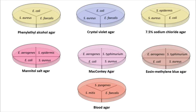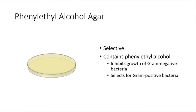The first type of media we will be looking at is phenyl ethyl alcohol agar. This is a selective type of media because it contains the ingredient phenyl ethyl alcohol, which inhibits the growth of gram-negative bacteria while allowing gram-positive bacteria to grow. On this plate you will be inoculating E. coli, S. aureus, and E. faecalis.